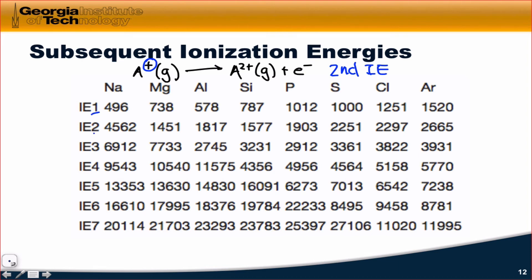We can look at the first, second, third, fourth, fifth, etc. ionization energies for a variety of elements. And what I want you to notice here is that there is a transition between two of the ionization energies where there's a very large, an abnormally large, in fact, jump from one ionization energy to the other.